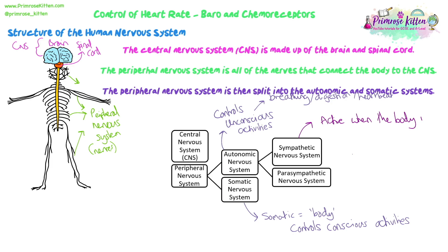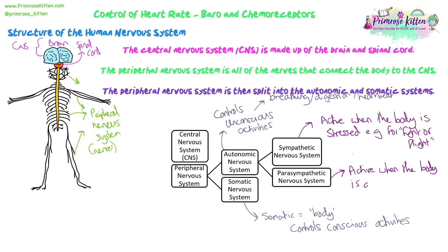Obviously, we're talking about nervous control here, not hormonal control. You should know from GCSE about adrenaline increasing your heart rate and being part of the fight or flight response — that's a hormone and that's hormonal control. We're not talking about that here. The parasympathetic nervous system does the opposite — 'para' meaning the negative or off side of something. This is active when the body is at rest and calm, and it works to slow things down. In our example, it's going to decrease heart rate.